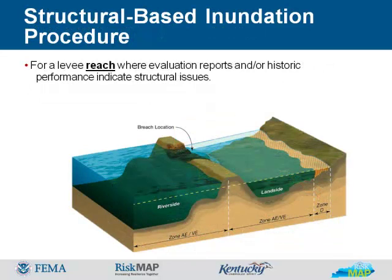The structural-based inundation procedure will be used for reaches with defined structural issues, such as slope stability, seepage, or piping. It may result in higher elevations than the natural valley procedure and will be used in easily identified areas of weakness, higher risk areas, and areas with extensive good quality data available. Mapping results from a composite of the analysis of inundation at each potential breach location — failure modes can be either overtopping or internal depending on which portions of 44 CFR 6510 the levy fails to meet. Accurately predicting actual breach locations and shapes is not feasible; a minimum of two model breaches per reach is expected. Model breach locations will not be evident on the final FIRM, each breach is independent, and any link along the reach is subject to breaching. The special flood hazard area on the FIRM will be a composite of the 1% annual chance floodplain developed at each breach location.